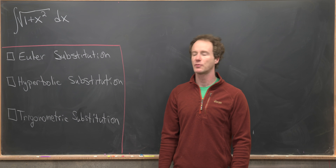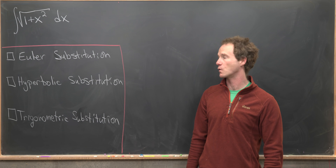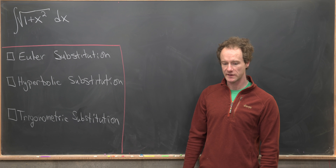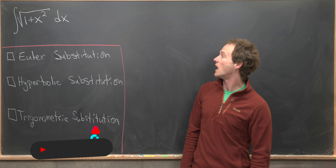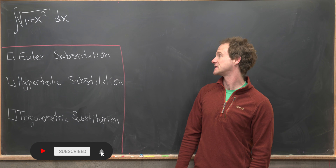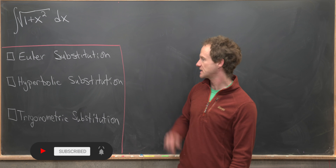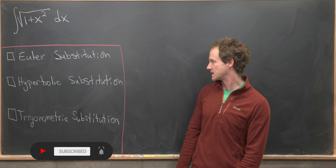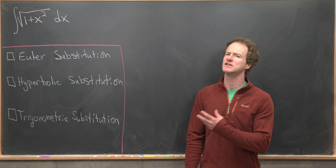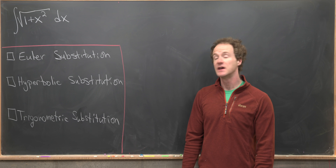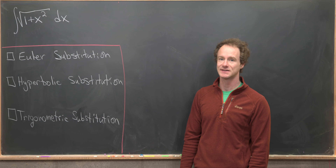Here we're going to look at a classic integral problem from calculus 2 and we're going to solve it three different ways. Our goal is to evaluate the indefinite integral of the square root of 1 plus x squared. We're going to use Euler substitution first, hyperbolic substitution second, and then trigonometric substitution last.